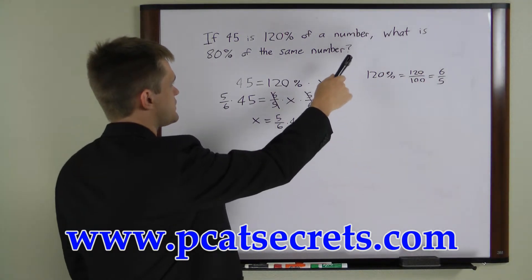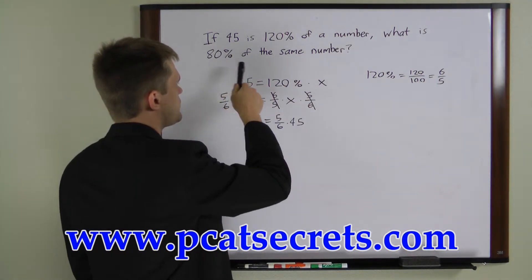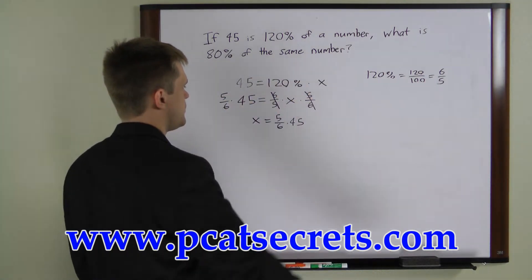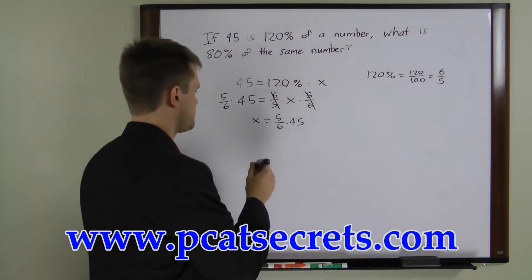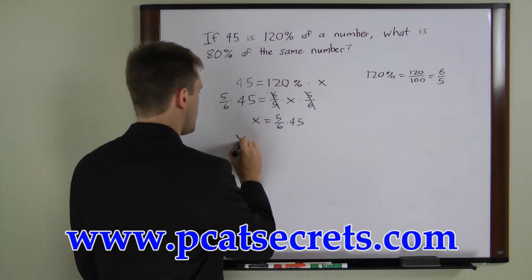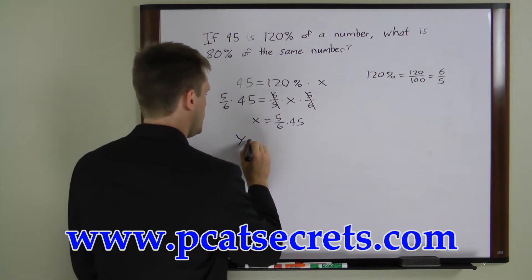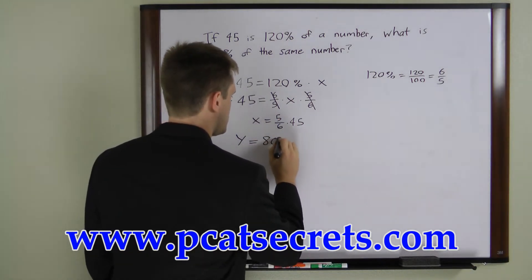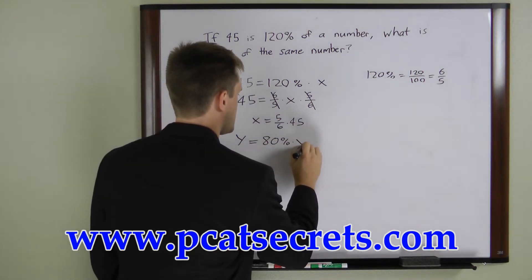The second part asks us what is 80% of the same number or 80% of x. So this equation can be written where y is the number we're looking for: y equals 80% times x.